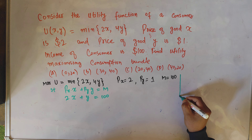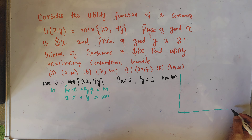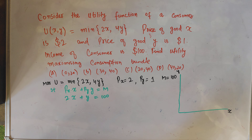We need to find out the correct option. We are given the utility function U = minimum of 2x comma 4y. This is a min function — we call this the fixed proportion utility function or perfect complementary utility function. Price of good x is $2, price of good y is $1, income of the consumer is $100. We need to find out the optimal consumption bundle that will maximize the utility of the consumer.